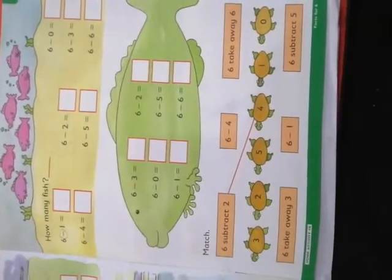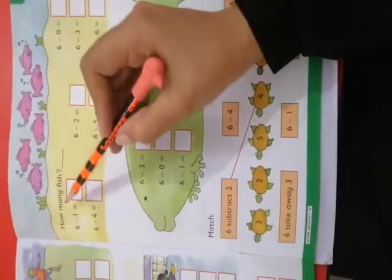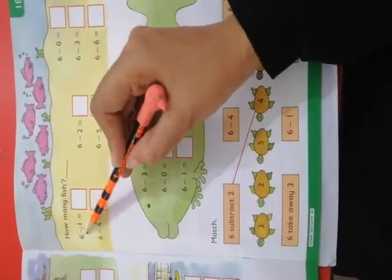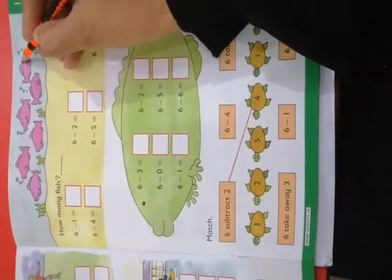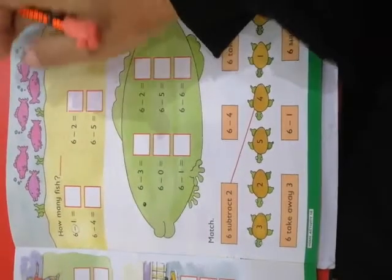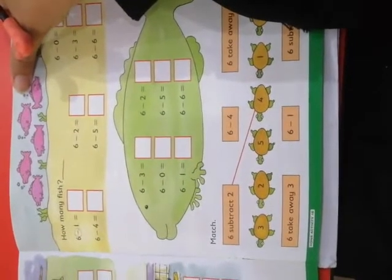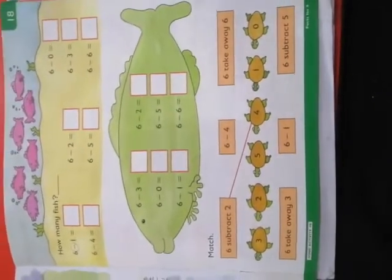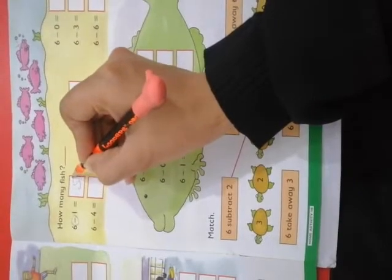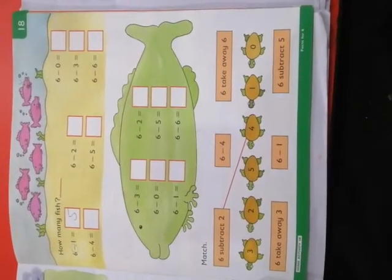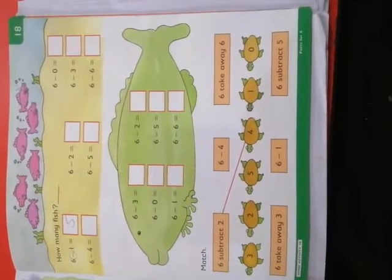Now how many are subtracted? 6 minus 1 — these are 6 fishes. Subtract 1 fish. Count how many are left: 1, 2, 3, 4, 5. How many are left? 5 fishes are left. Read after me: 6 minus 1 is equal to 5.